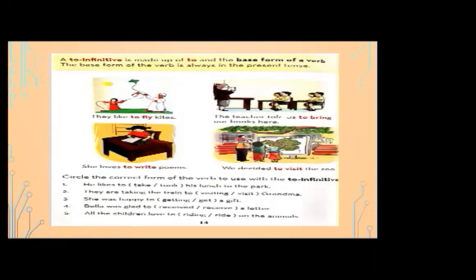The base form of the verb is always in the present tense. Through the picture and through the sentence, I'm giving you examples. Number one: they like to fly kites. Number two: the teacher told us to bring our books here. Number three: she loves to write poems. Number four: we decided to visit the zoo.